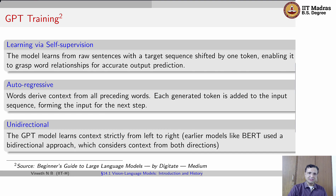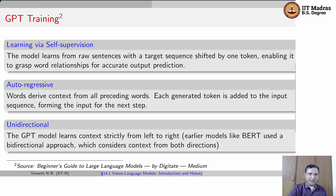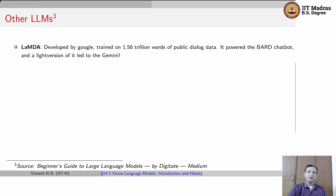One key difference of the GPT LLM from earlier models like BERT is that GPT strictly learns context from left to right. BERT was an earlier language model which used a bidirectional approach, using context from left to right as well as right to left. Beyond GPT, there have been many other LLMs that have become popular over the last few years.